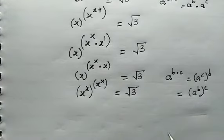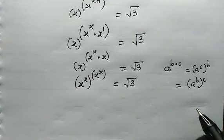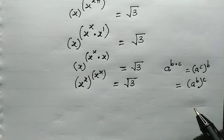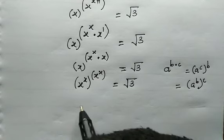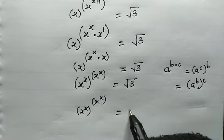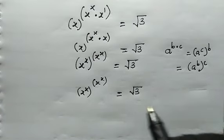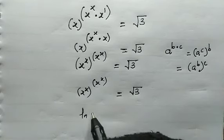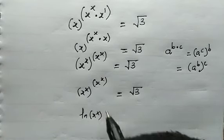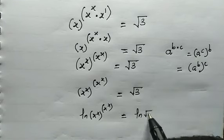Now the most interesting part of this video is that I will be making use of the Lambert W function, and the answer to this problem involves two Lambert W function operations. So here we have x to the power of x, then x to the power of x, equal to root 3. From here, let's take the natural log of both sides: the natural log of x to the power of x, raised to the power of x to the power of x, equals the natural log of root 3.